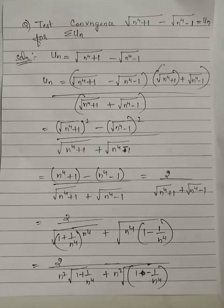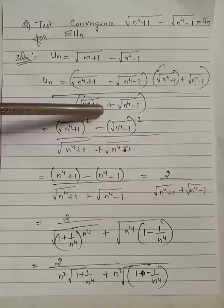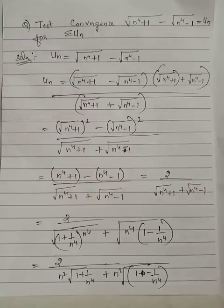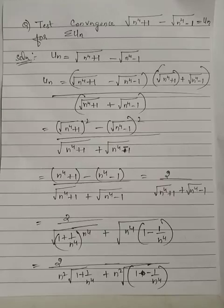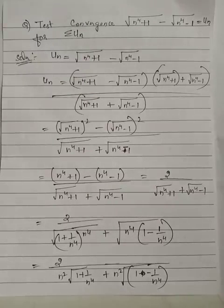We rationalize the given term un by considering the term obtained by replacing the minus sign by a plus sign. Rationalization means whenever we have square root expressions and we need to avoid the square root, we multiply and divide the given term by a term which has the opposite sign in the middle.